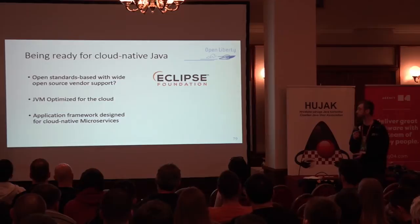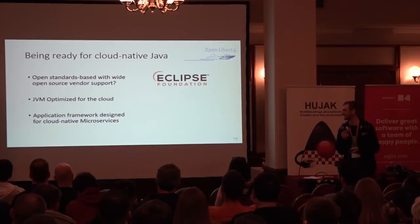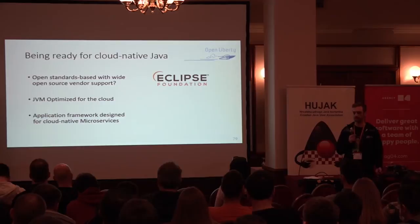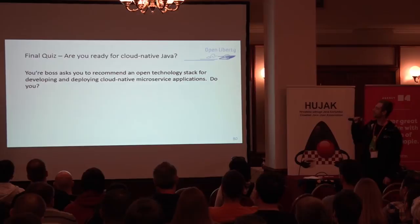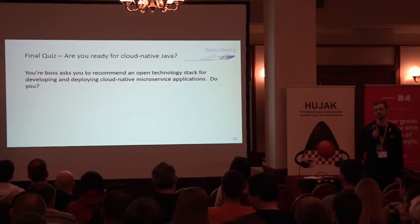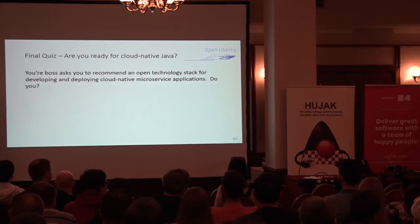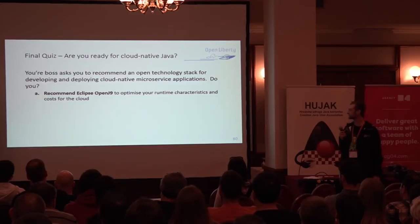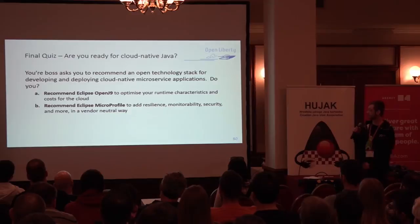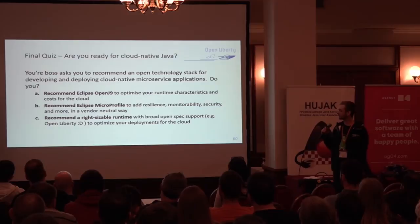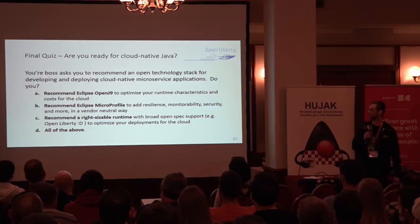Being ready for cloud-native Java: open standards in the Eclipse Foundation, a JVM optimized for the cloud bringing your stuff up brilliantly quickly and saving you money, and an application framework designed for the cloud. Final quiz: your boss asks you to recommend an open technology stack for developing and deploying cloud-native microservice applications. Do you recommend Eclipse OpenJ9 to optimize runtime characteristics? Eclipse MicroProfile for resilience and monitorability in a vendor-neutral way? Or the right-sizeable runtime like OpenLiberty to optimize your deployments? Or all of the above?